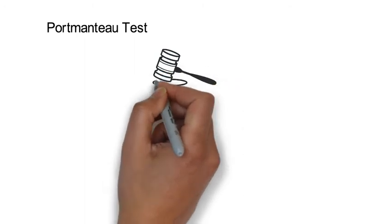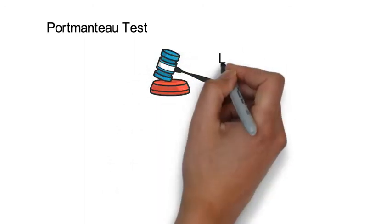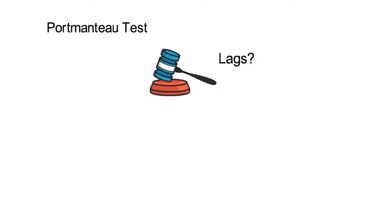This video talks about how to conduct a portmanteau test for detecting ARCH effects in residuals. Like in a standard F-test, you have to specify for how many lags you would like to test for autocorrelation. Let's call the lag length M and denote M to be equal or larger than 1.